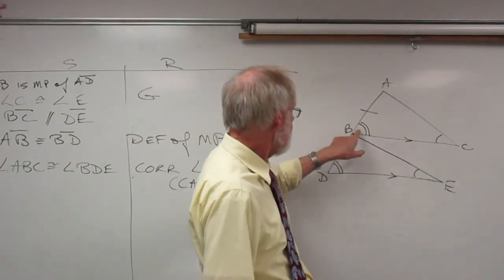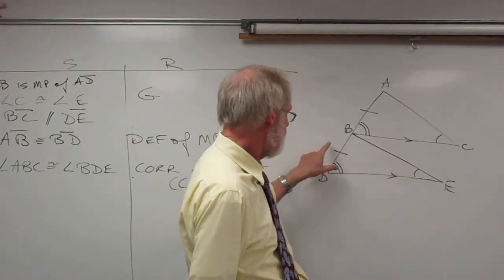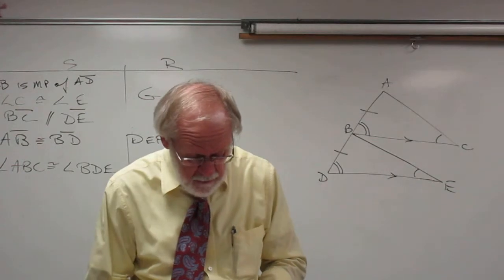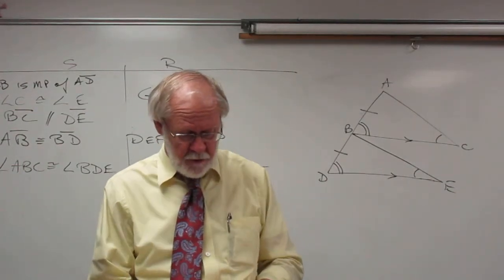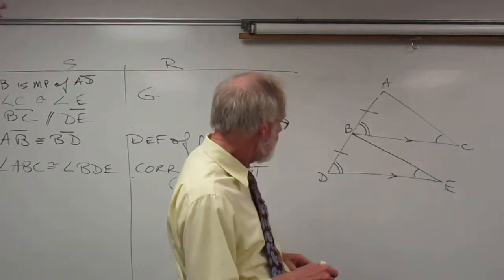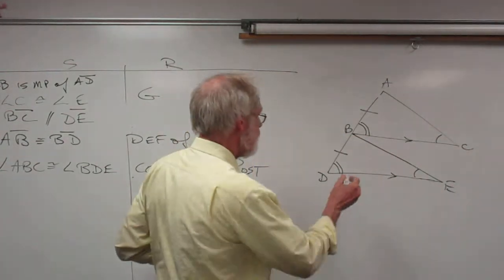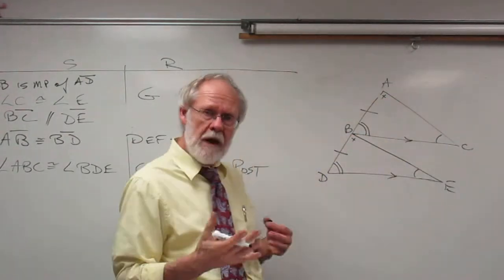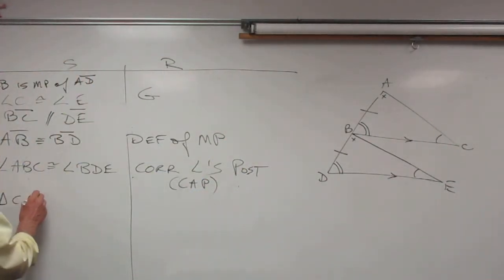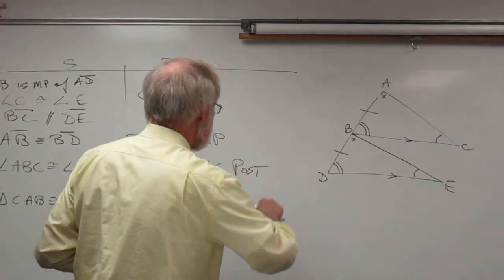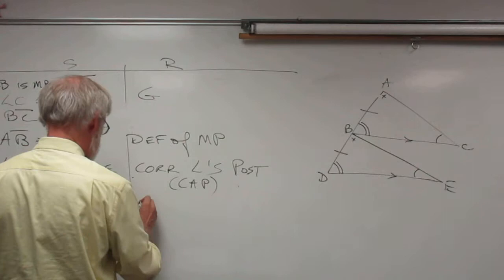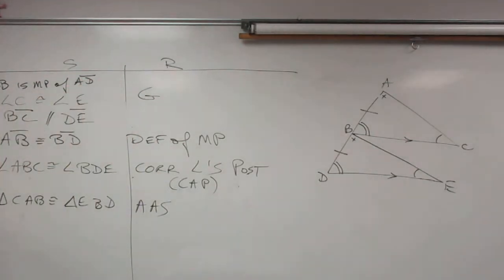Now it looks like we have an angle, an angle, and a side — angle-angle-side. The proof is to prove angle BAC congruent to angle DBE. We start with the triangles: triangle CAB is congruent to triangle EBD, and the reason is angle-angle-side (AAS).